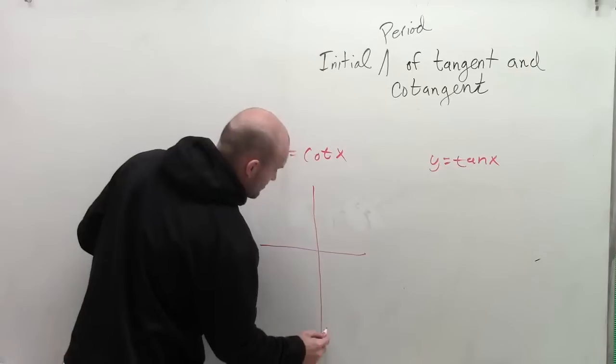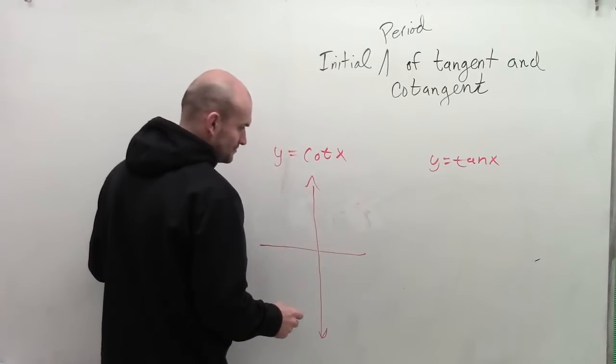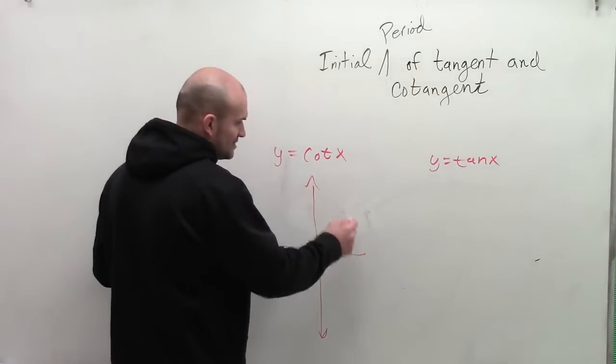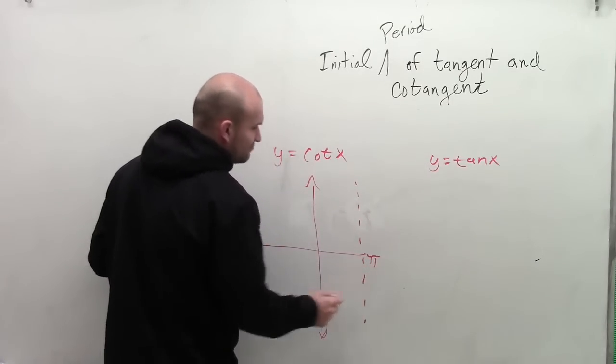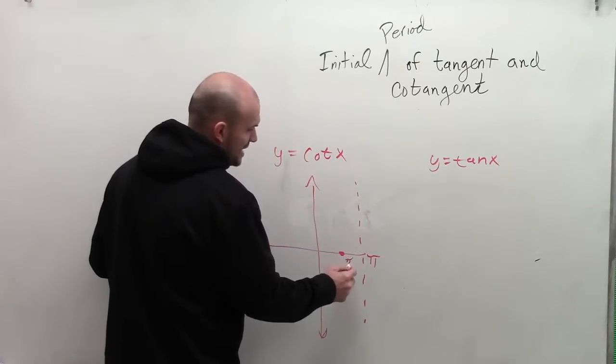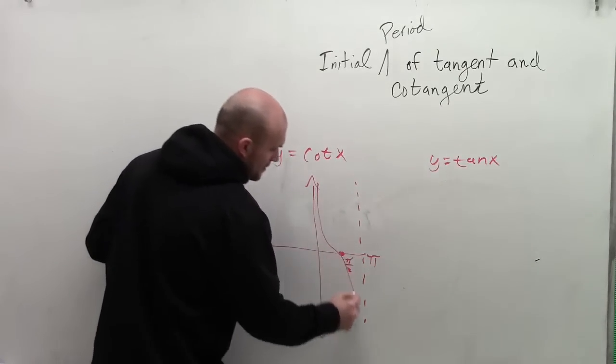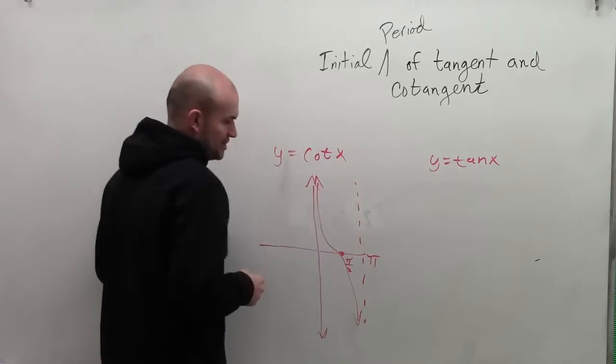And what I'm going to do is show the initial period of our parent graph. So by looking at the parent graph of the cotangent function, what we notice is that the cotangent function has initial period of pi, crosses at pi halves, and is going to show this shape here.